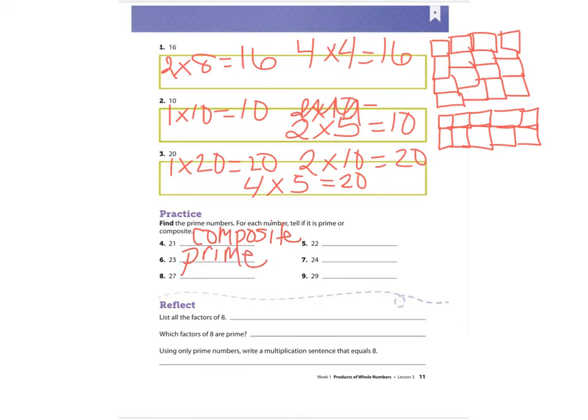Number eight, the number 27. I know that one times 27 is 27, but I also know that nine times three is 27, so 27 is a composite number. It has more than one factor. If it just has the factor one and itself, it is a prime number.